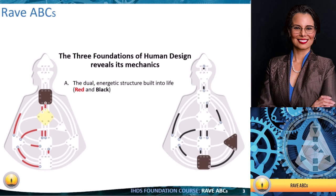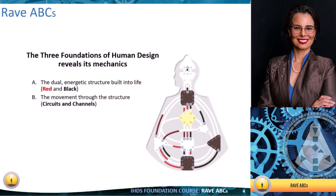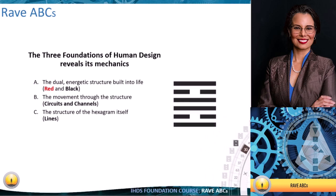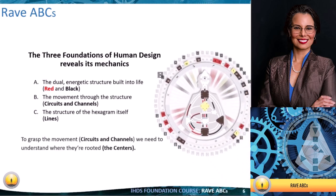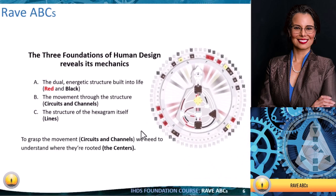The red and black is one of the things we're going to dive into when it comes to you and your charts — how all of that works — as well as the movement of energy through the structure of the body graph. We'll talk about circuits, basic circuitry, and an introduction to the channels from the perspective of where they lay within that circuit group. Then the C of the ABCs covers the structure of the hexagram qualities and line values.